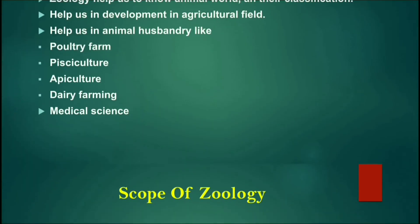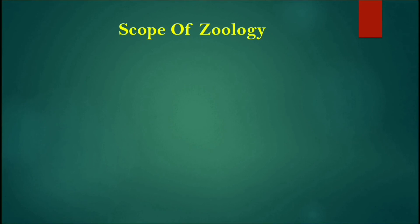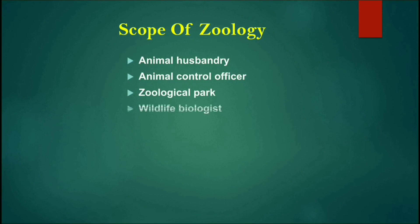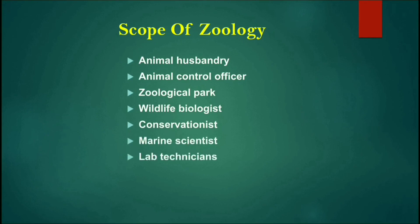The most important topic to discuss about Zoology is the scope or career in Zoology. After taking a degree in Zoology, you can start a career in animal husbandry, work as an animal control officer, work in a zoological park, and you can also work as a wildlife biologist, as a conservationist, as a marine scientist, as a lab technician, or choose research and teaching professions.